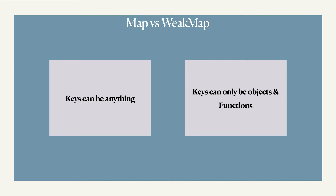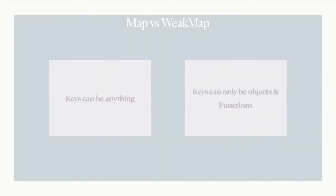A WeakMap can even take another WeakMap as a key. Any attempt to set non-objects like strings, numbers, nulls, undefined, symbols, NaN, etc. will result in an error.